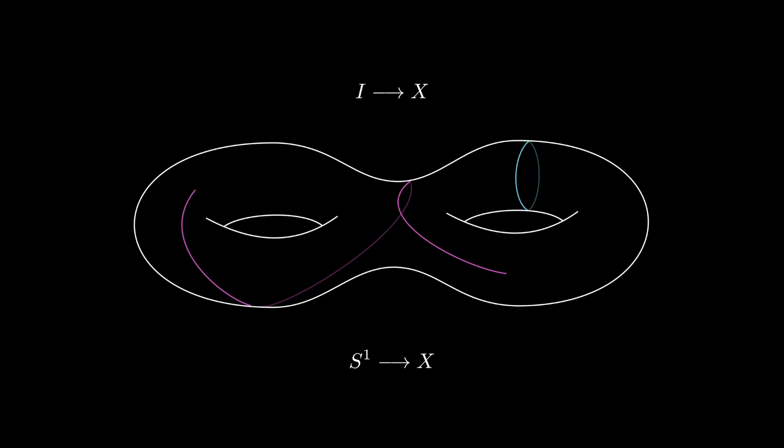The Yoneda lemma tells us that my mystery space X is not just... we don't just get a pretty good idea of what it is by looking at its relationship to other objects. We can entirely determine it by its relationship to other topological spaces. But in what sense do we mean that?